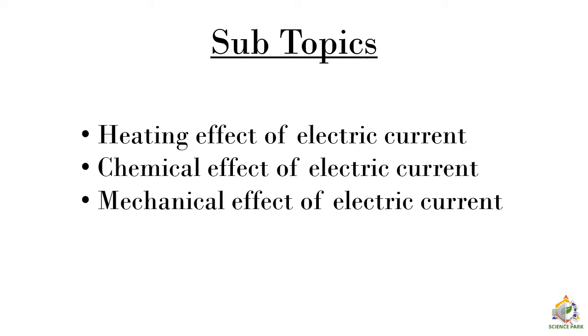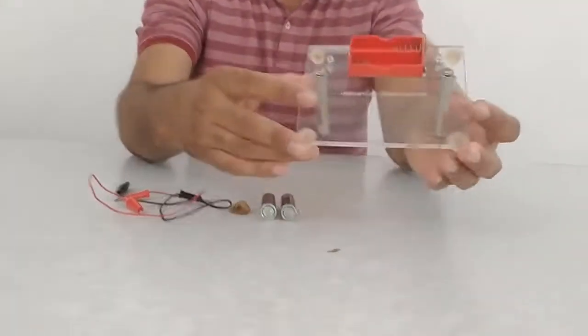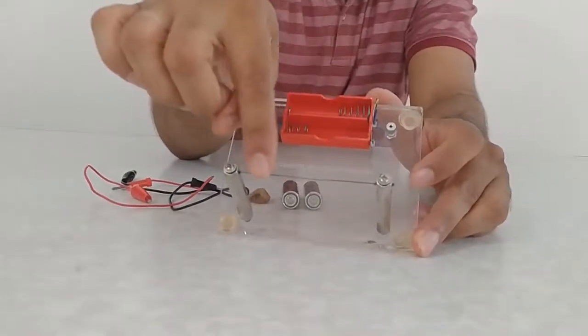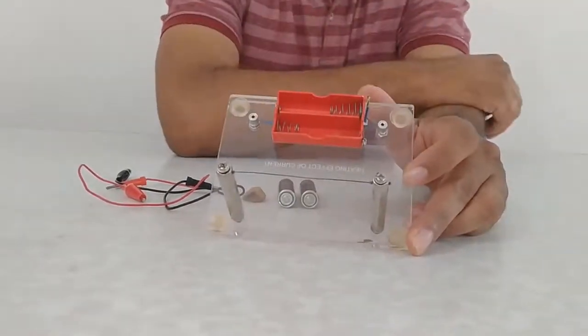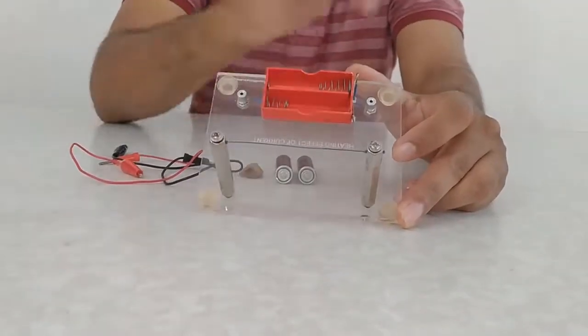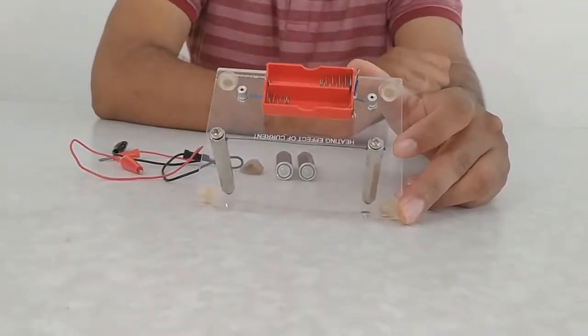To understand the heating effect of electric current, let's see an experiment. Here we have an assembly with a wire made up of nichrome. The specialty of this wire is that if we pass an electric current through it, it becomes hot. And here we have the cell holder — we are going to put the cells in it.